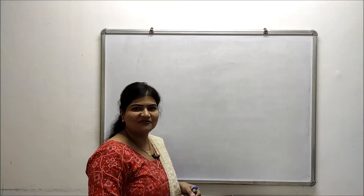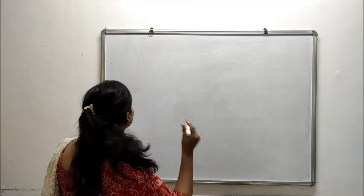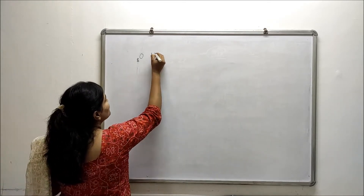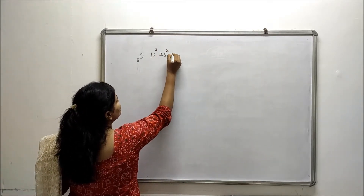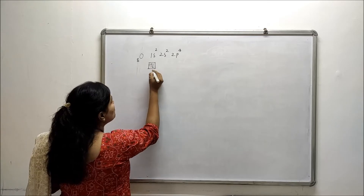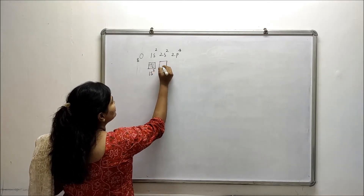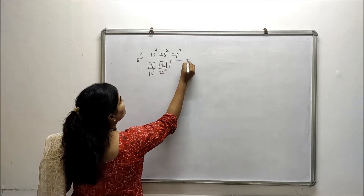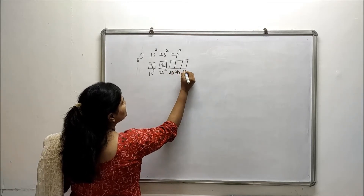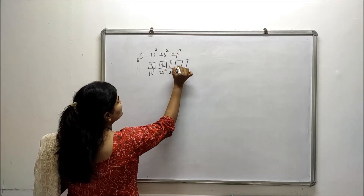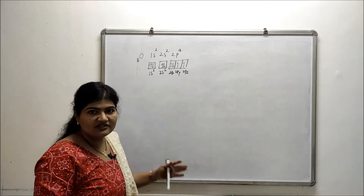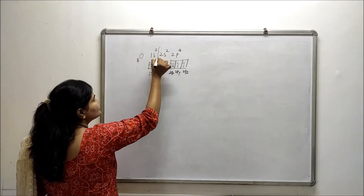We will start from the electronic configuration of oxygen. Oxygen has atomic number 8, so the configuration will be 1s2, 2s2, 2p4. If we draw the block diagram it will be 1s2, then 2s2, and 2px, 2py, 2pz — and 2p4 means electrons fill as 1, 2, 3, and 4. This is the configuration of oxygen.